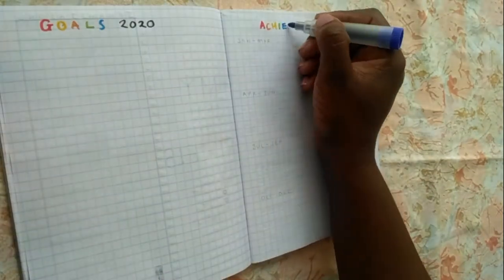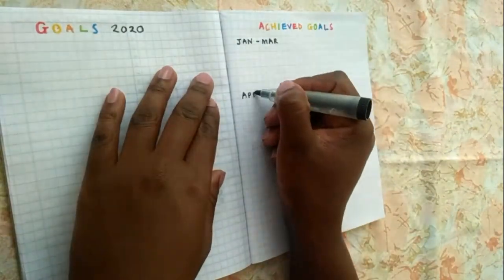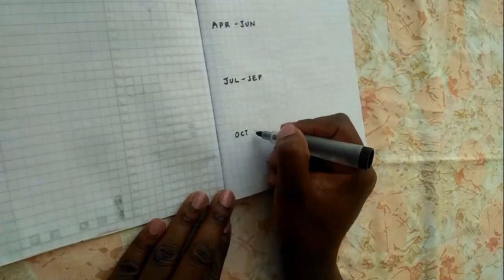Then I have my 2020 goals page and the next one to track progress on things achieved within the quarters. Super simple.